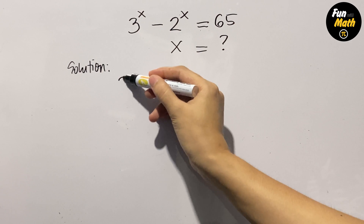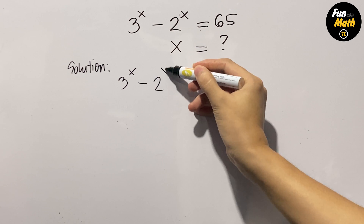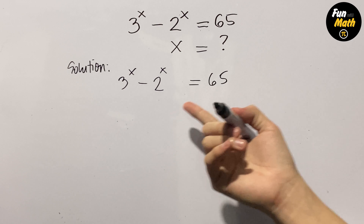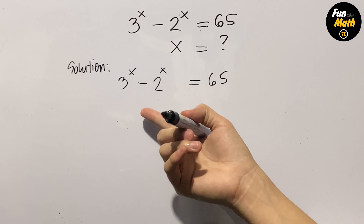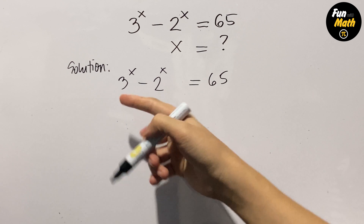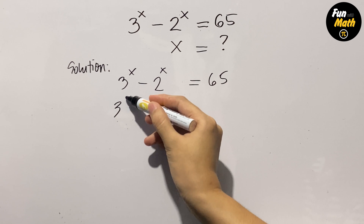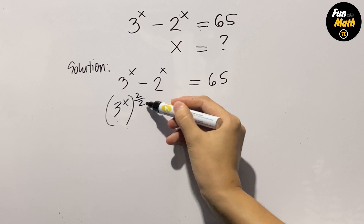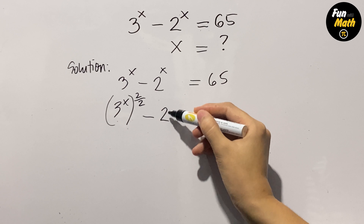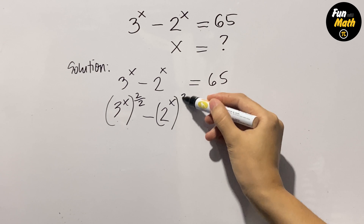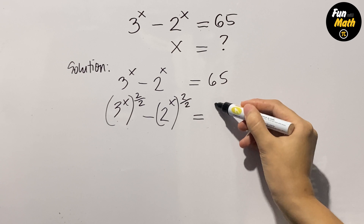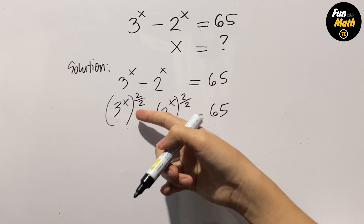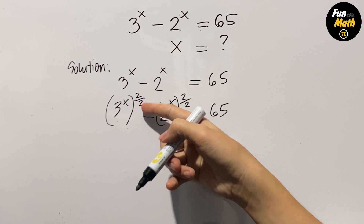Let's write down: 3 to the power of x minus 2 to the power of x equals 65. We are going to insert a power which is equivalent to 1, and that is 3 to the power of x, whole to the power of 2 over 2, minus 2 to the power of x, whole to the power of 2 over 2, equals 65. Now if you observe, our power is 2 over 2, and that is simply equivalent to 1.